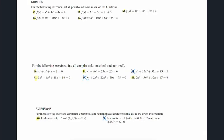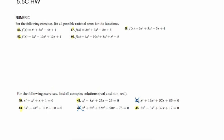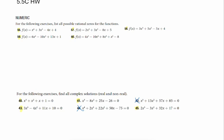For homework 5.5C, problem 56: you're not finding the zeros, just listing the possible rational zeros using p over q. Here p = 4 (factors: ±1, ±2, ±4) and q = 1, so the possible zeros are ±4, ±2, and ±1. Just list them and move on — you don't have to do anything further with them.